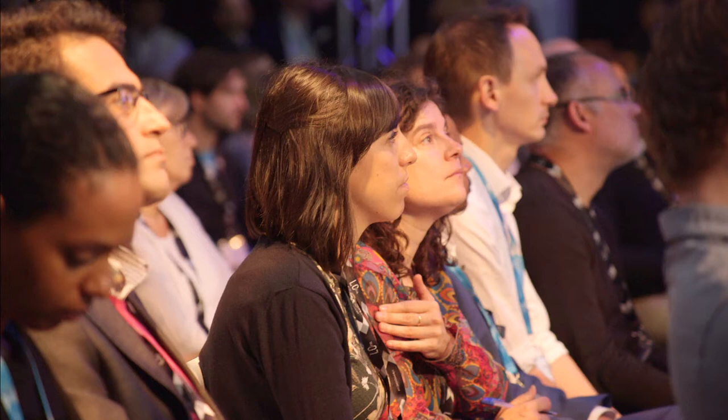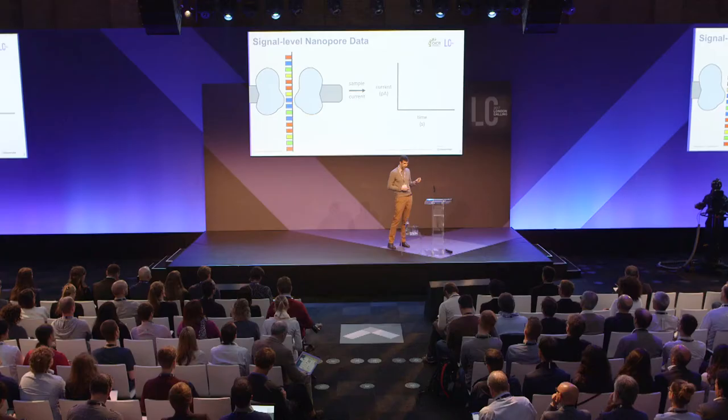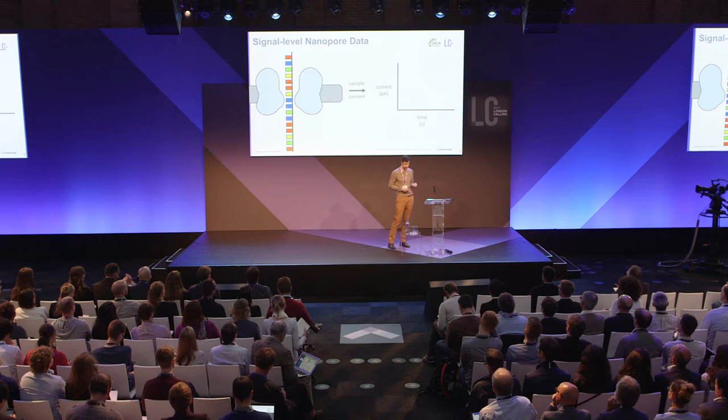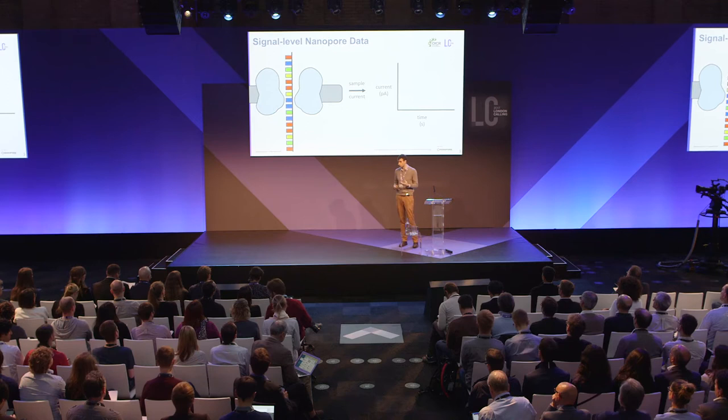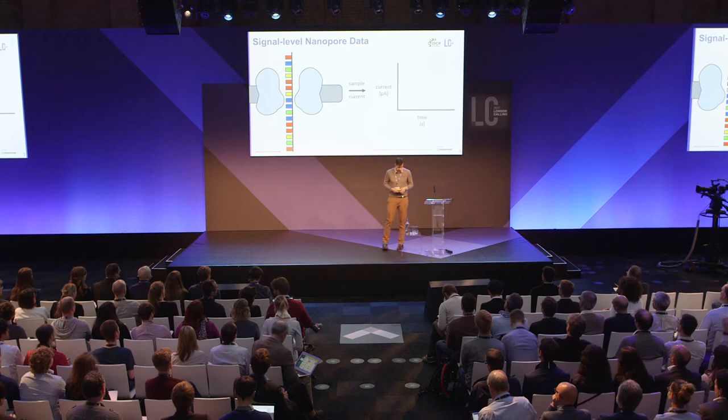The MinION sequencer is continuously monitoring the amount of current flowing at around 4 kilohertz and writing those current samples out to FAST-5 files, which is the observable data of the system. The fundamental principle is that the sequence context — the DNA sequence within the pore — is going to disrupt this flow of electrical current in a way that's measurable and that we can use to infer what the DNA sequence was that passed through the pore.